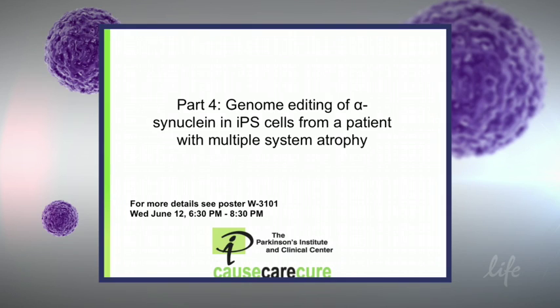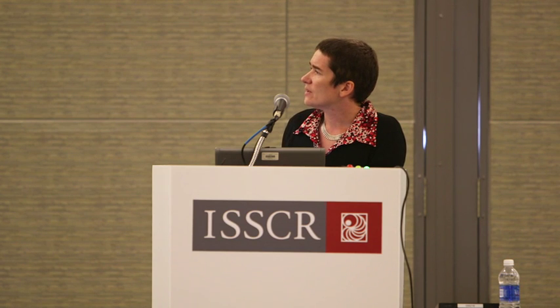Going to the last part: genome editing of a gene that is very important for Parkinson's disease — alpha-synuclein. This is the main protein that you find in Lewy bodies of the disease, and in this case it's from a patient who has multiple system atrophy. We had a poster a couple of nights ago that showed more detail on what we did.